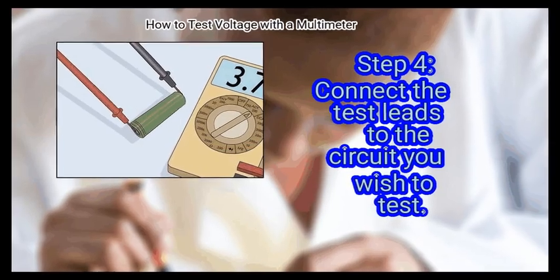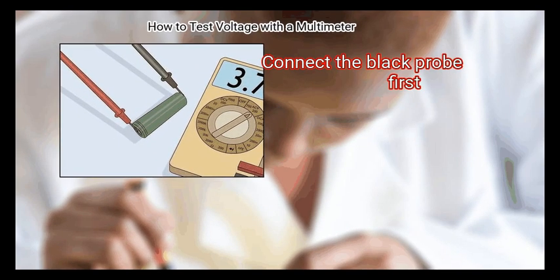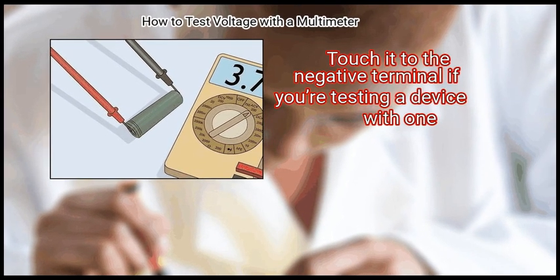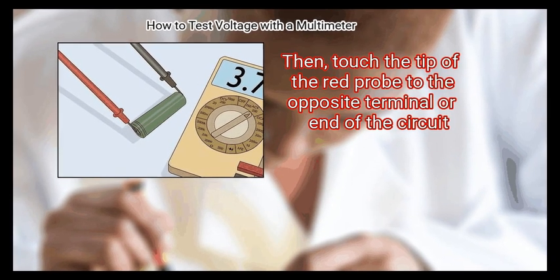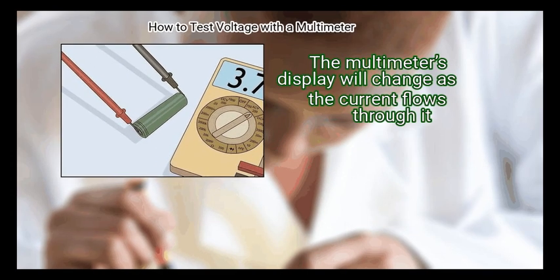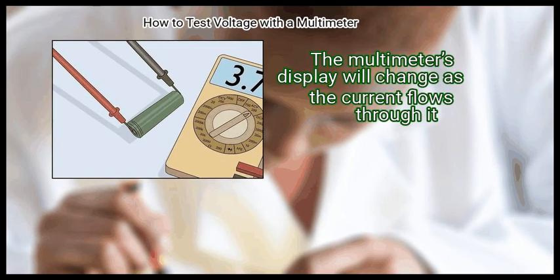Step 4: Connect the test leads to the circuit you wish to test. Connect the black probe first. Touch it to the negative terminal if you're testing a device with one. Then touch the tip of the red probe to the opposite terminal or end of the circuit. The multimeter's display will change as the current flows through it.